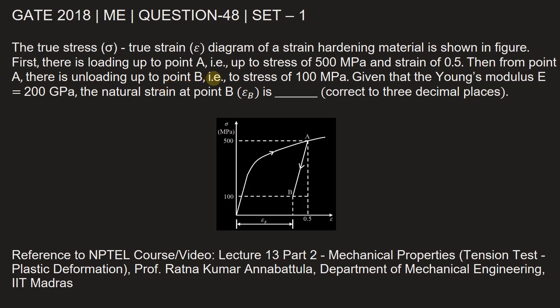Then from point A, there is unloading up to point B, that is, to a stress of 100 MPa. Given that the Young's modulus E is equal to 200 GPa, the natural strain at point B (εB) is blank. We need to find out strain at point B.